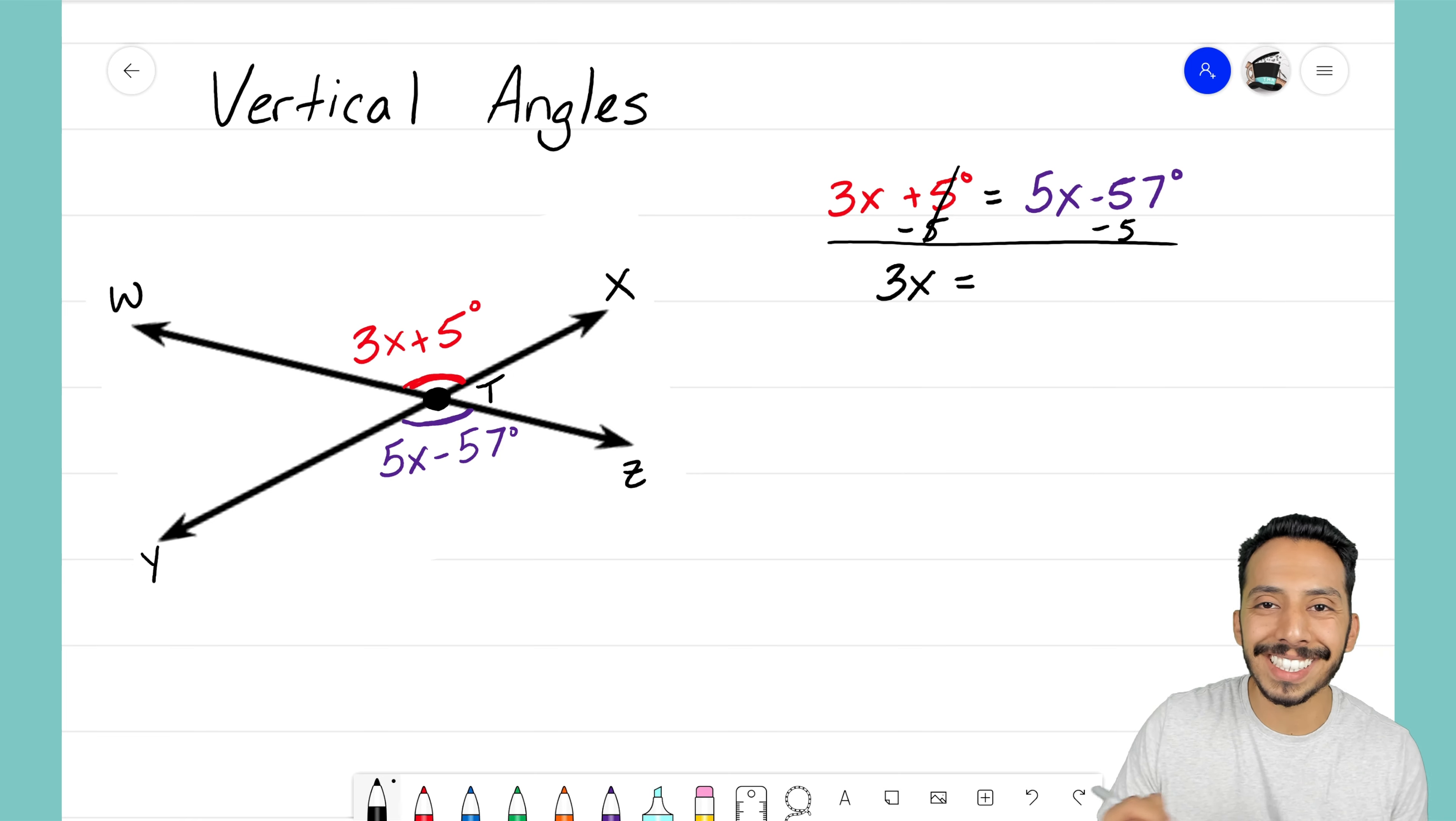I'm left with just 3x on the left hand side. I'm going to have 5x now negative 57, take away 5 more, that's going to leave me with minus 62 degrees. So far so good, I have my constants over on the right side.